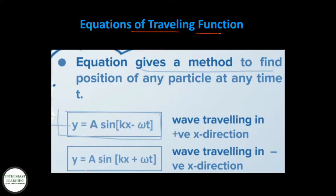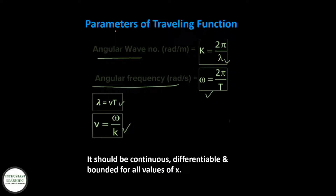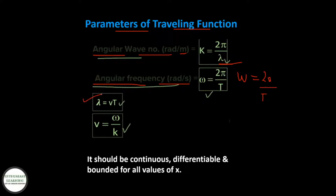The equation of a traveling wave gives a method to find the position of any particle at time t. Y = A sin(kx − ωt) when the wave is traveling in the positive x direction, and Y = A sin(kx + ωt) when the wave is traveling in the negative x direction. Parameters: angular wave number k = 2π/λ (radians per meter), angular frequency ω (radians per second), λ = v·T, and v = ω/k. The function must be continuous, differentiable, and bounded for all values of x.